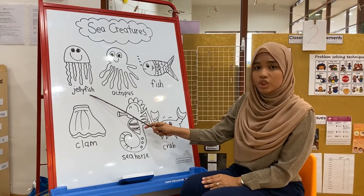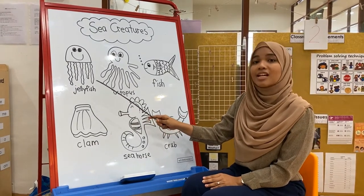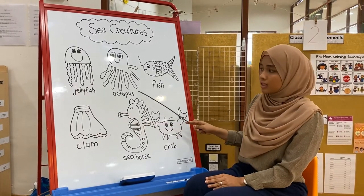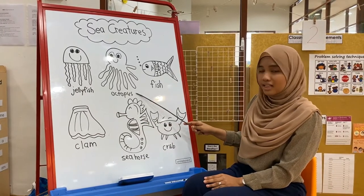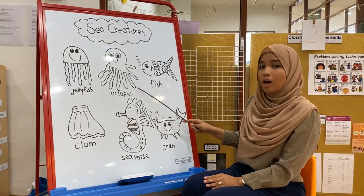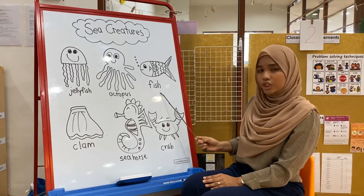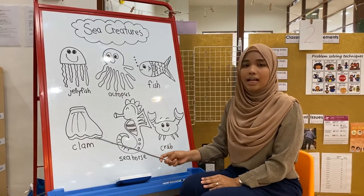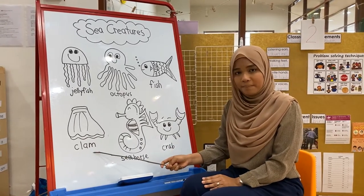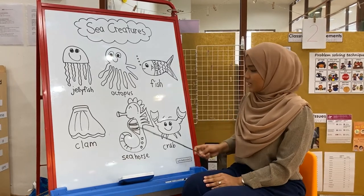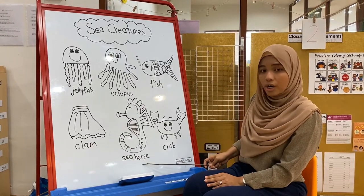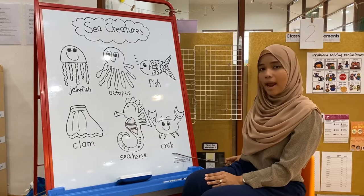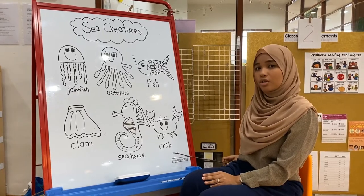We have jellyfish — let's say together: jellyfish. Octopus. Fish. Clam. Seahorse. Crab.